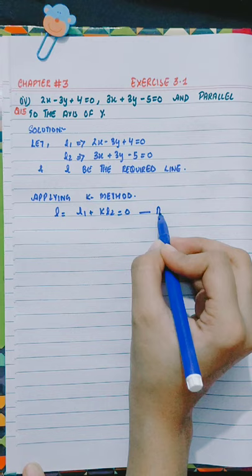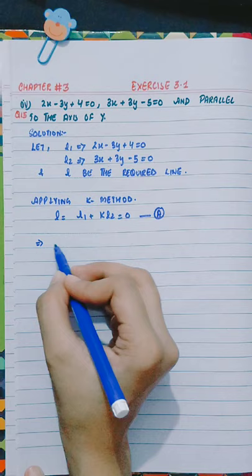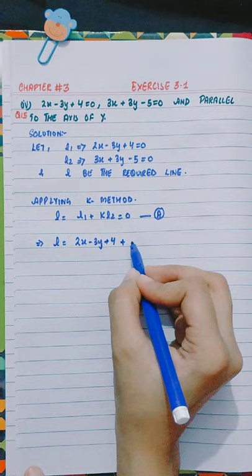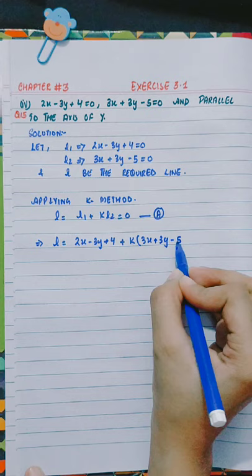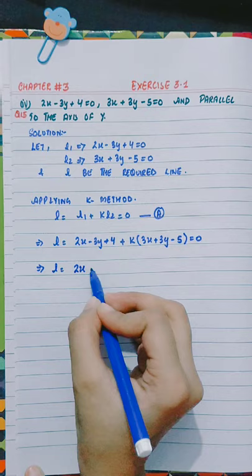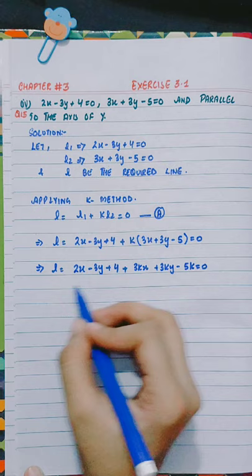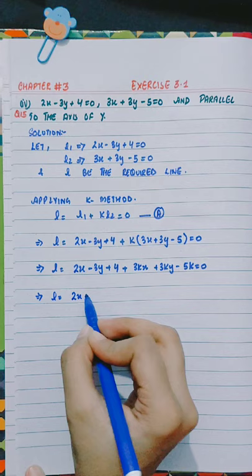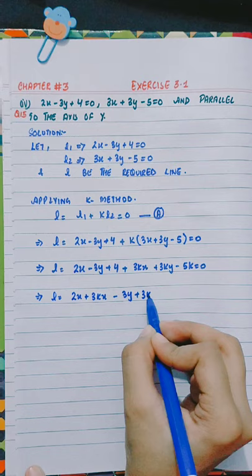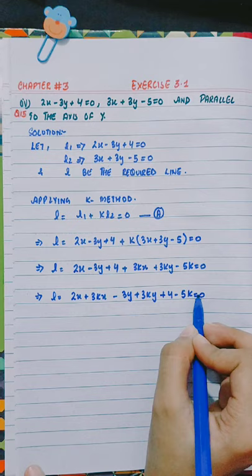Let's look at equation A. L equals to 2x minus 3y plus 4 plus k into 3x plus 3y minus 5 equals to 0. Expanding: 2x minus 3y plus 4 plus 3kx plus 3ky minus 5k equals to 0, giving us 2 plus 3k into x plus 3k minus 3 into y plus 4 minus 5k equals to 0.